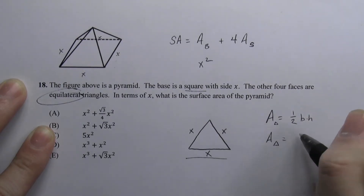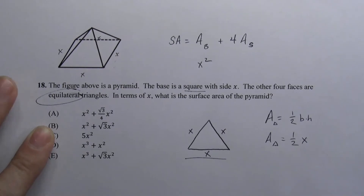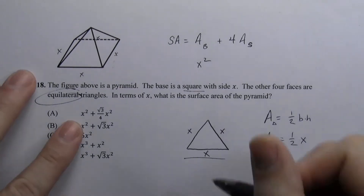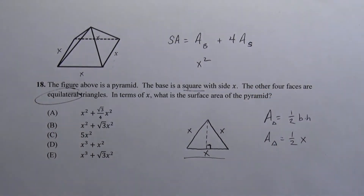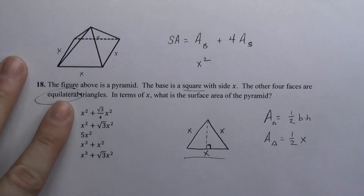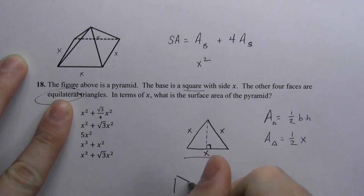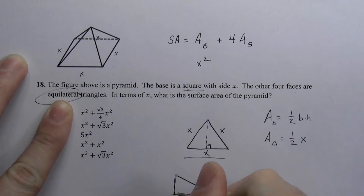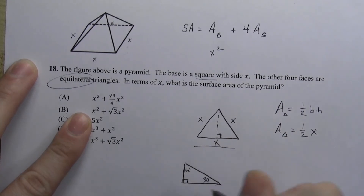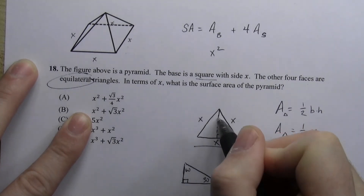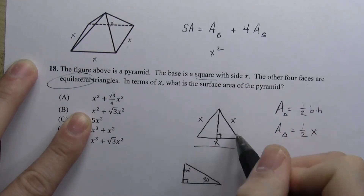So the area is one half times x times the height. We need to find the height, which must be perpendicular to the base. A really good trick is that an equilateral triangle is a perfect hiding spot for two 30-60-90 triangles. A 30-60-90 triangle has very consistent relationships among its sides — this is 30 degrees and this is 60 degrees.